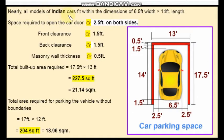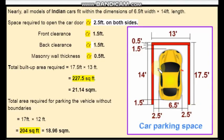Nearly all models of Indian cars fit within the dimensions of 6.5 feet by 14 feet length. Space required to open the car door on both sides is 2.5 feet. You have to open the door on both sides, and front clearance is 1.5 feet.